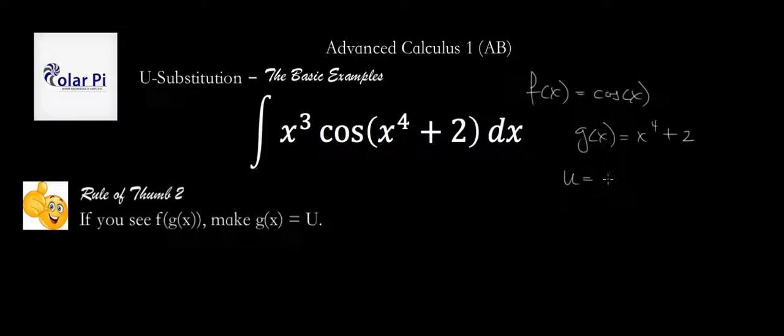And then g of x is equal to x to the fourth plus two. And we are told, using this rule of thumb, that we should make g of x equal to u. So u is equal to x to the fourth plus two. Now, based on that, we know that we have to find du. So du is going to be 4x to the third dx. Now, our first rule of thumb said, once we calculate du, we should see if we can find it inside of our integral, except for possibly missing a constant. And we look in here, and yes, we find du missing a constant.